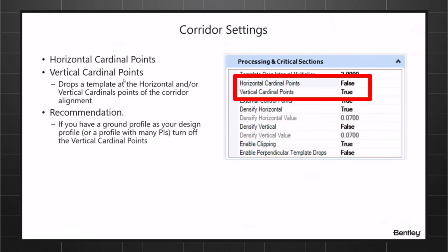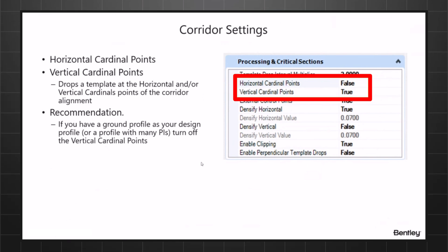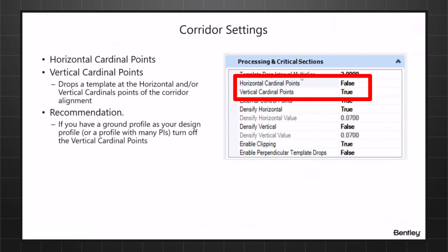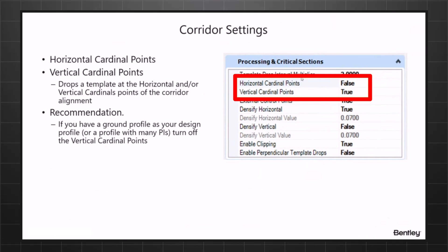Setting vertical cardinal points to false can speed up processing significantly. The same applies to horizontal cardinals — if you have a horizontal alignment that is just a bunch of PIs and it's set to true, it will drop a template at every PI, which may be very dense. Be aware that these two settings can greatly affect performance when you have a lot of PIs.